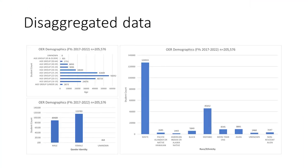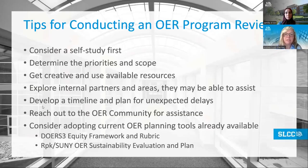We also had the opportunity to work with data science and analytics to create demographics of disaggregated data. We don't have all the examples here, but a few examples of the populations include age, ethnicity and race, first generation status, and gender identity.